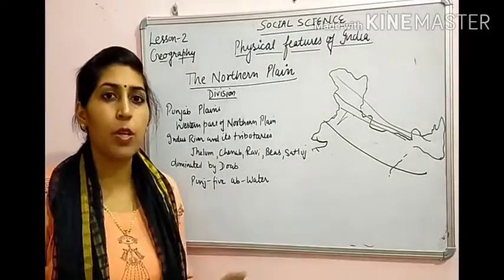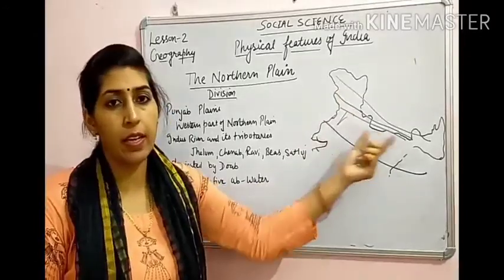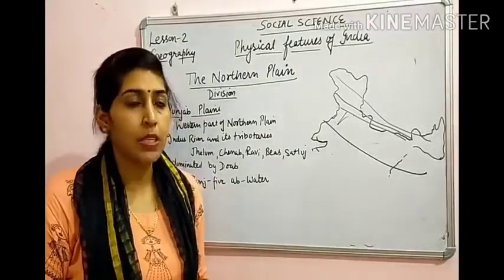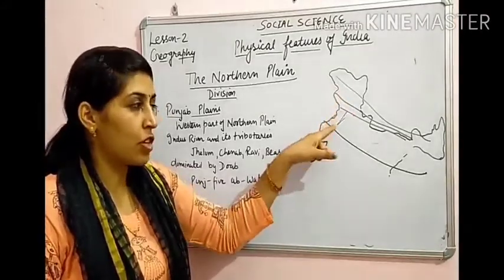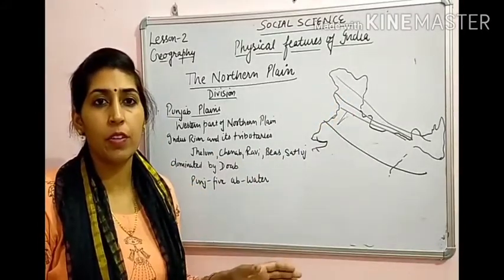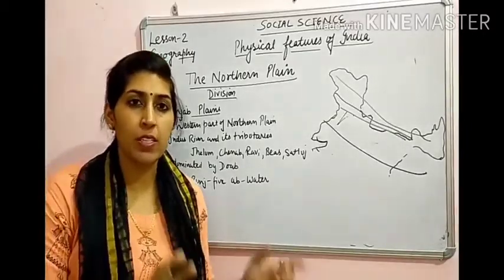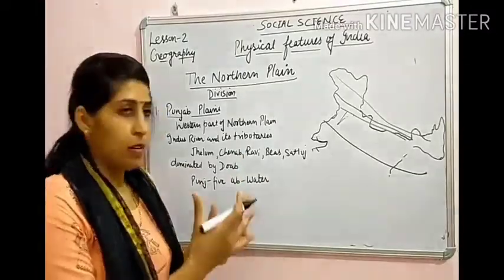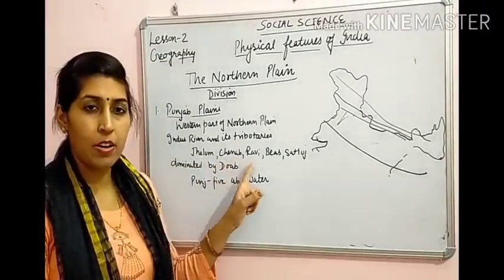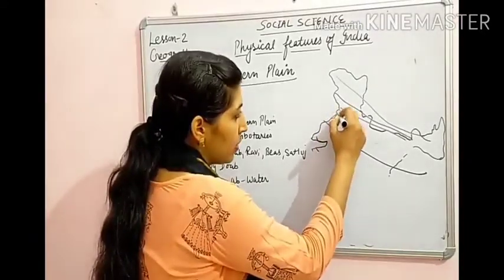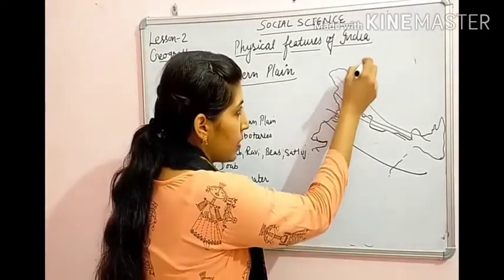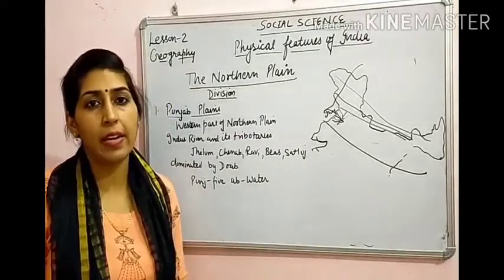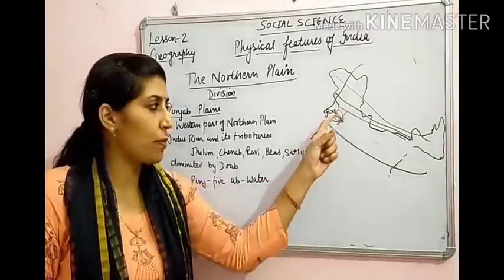Northern Plains are divided on the basis of the area they cover. The first division is the Punjab Plain. यह Northern Plain का वो part है जो Punjab में आता है और यह Northern Plain की western boundary बनाता है। यह area river Indus और उसकी tributaries — Jhelum, Chenab, Ravi, Beas, और Sutlej — द्वारा drain होता है। Punjab Plain is drained by the river Indus and its tributaries, and it makes the western boundary of the Northern Plain.